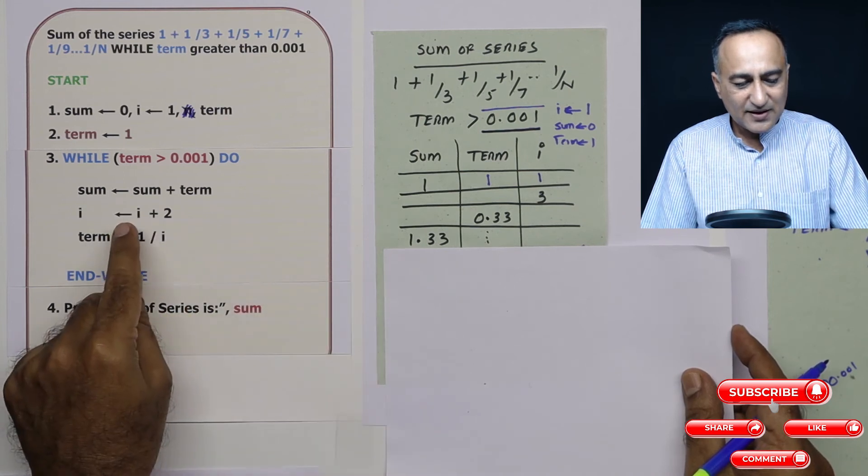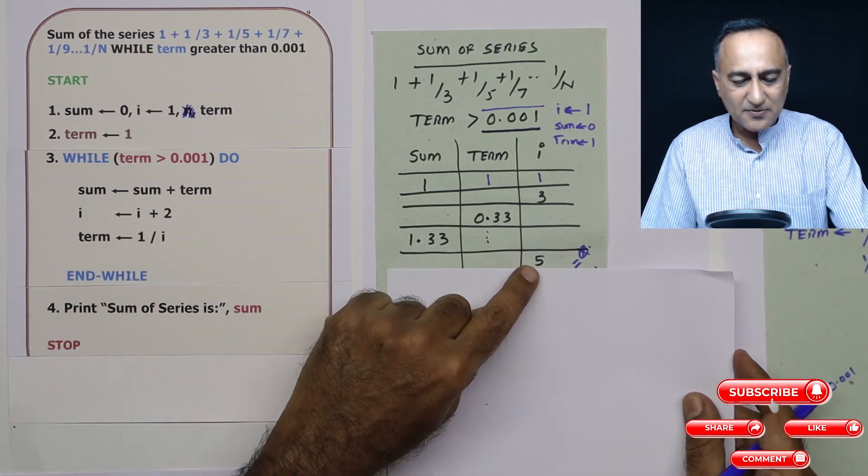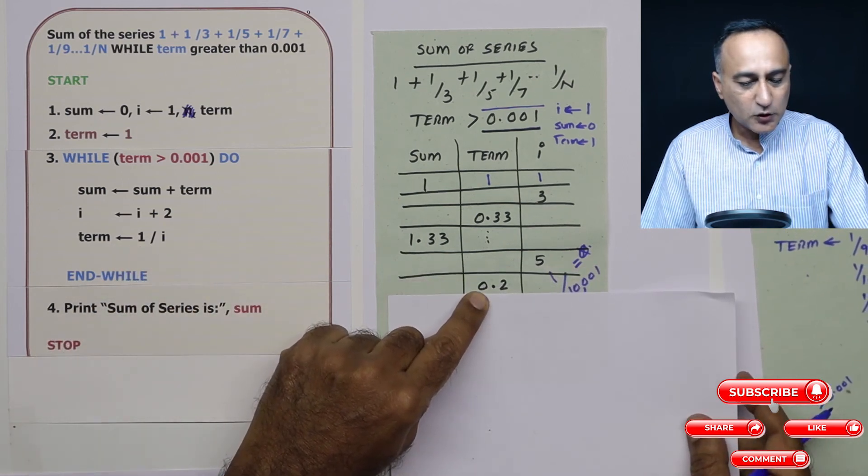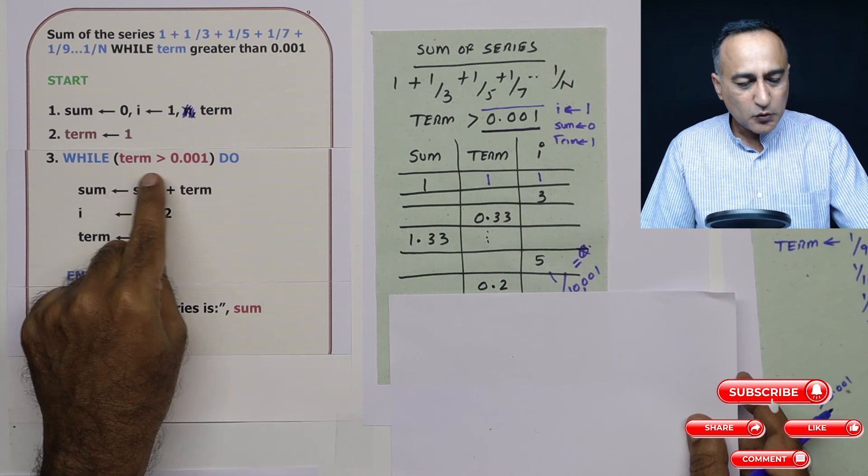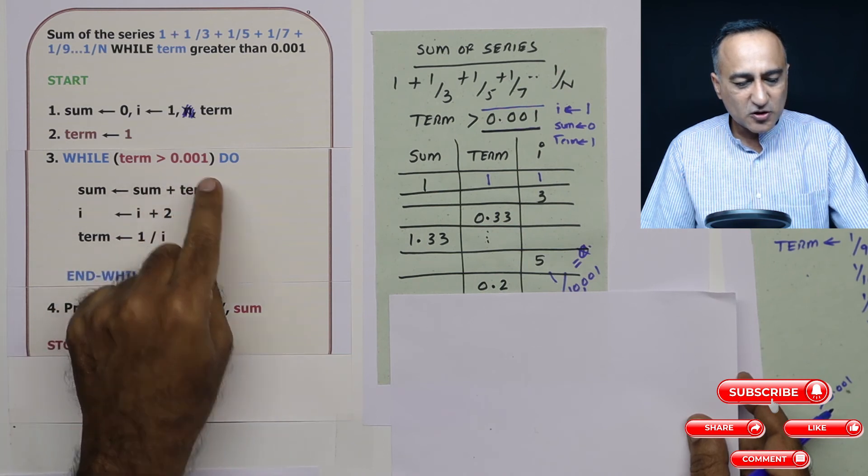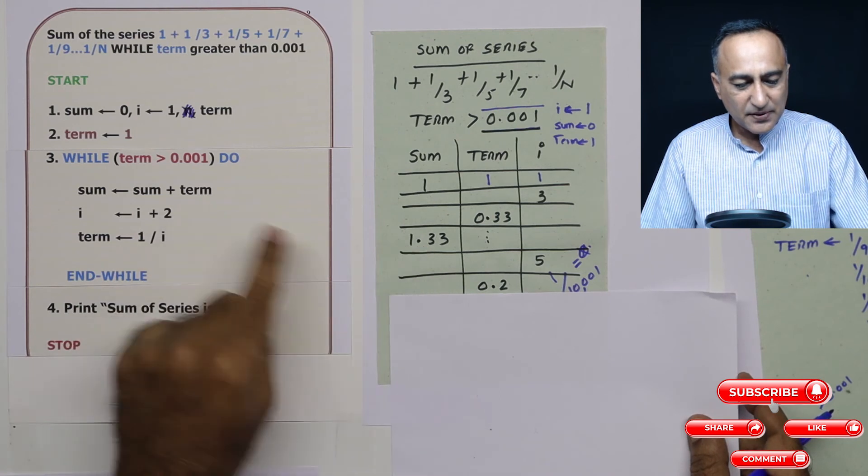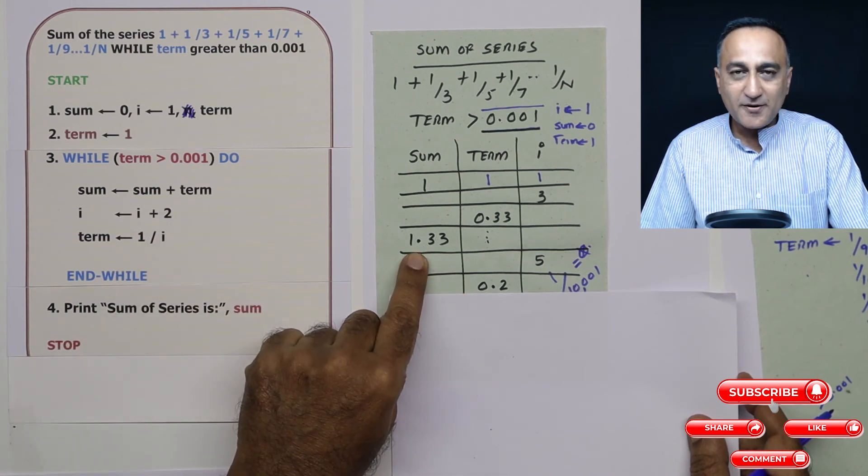Then after that i value is calculated, i has now become 5. Term is 1 upon 5 which is 0.2. Then 0.2 is greater than 0.001. Then sum is 1.33 plus 0.2 which is 1.53.